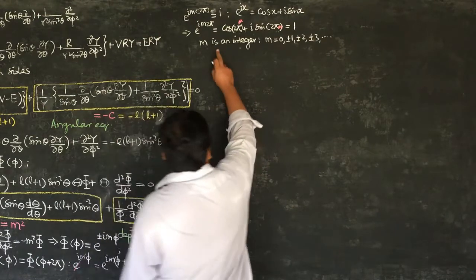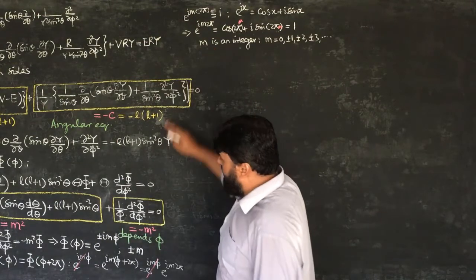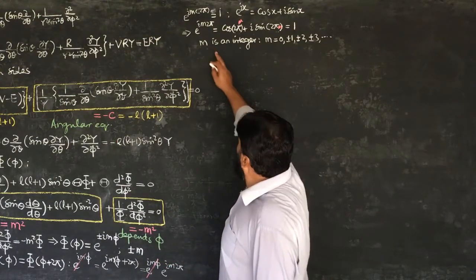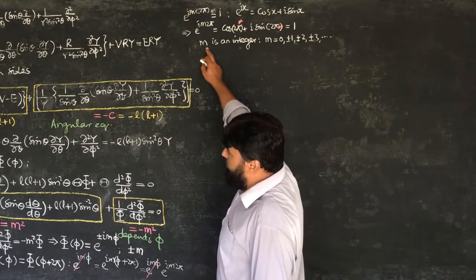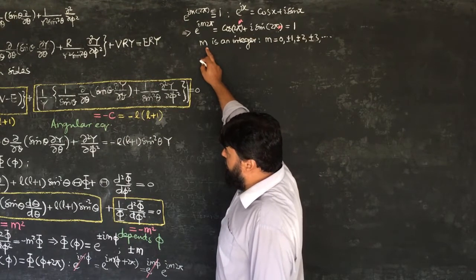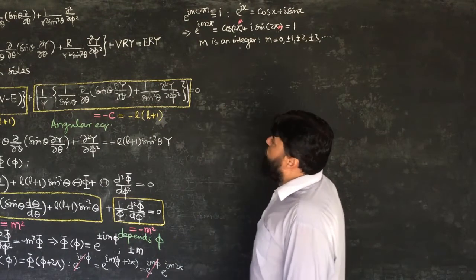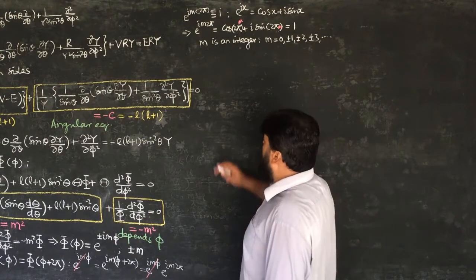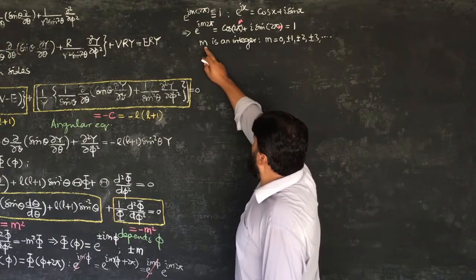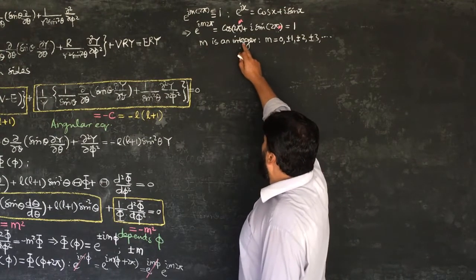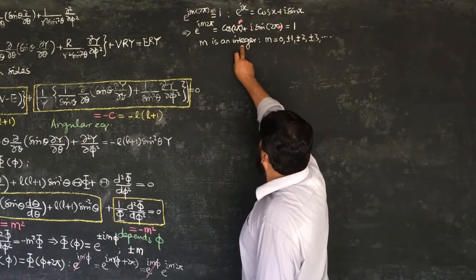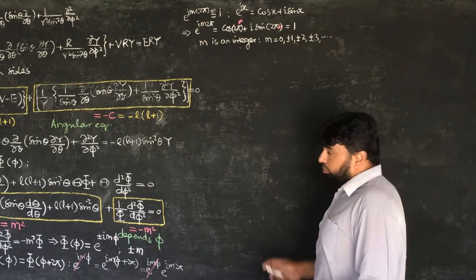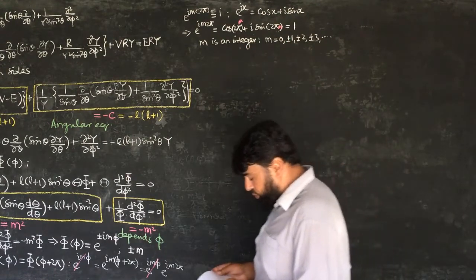We can satisfy the plus and minus values because sine is an odd function and becomes zero, while cos(−θ) = cos(θ) so it is unaffected. The constant m, which we introduced, turns out to be an integer taking both positive and negative values.